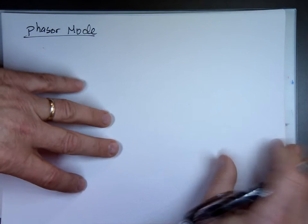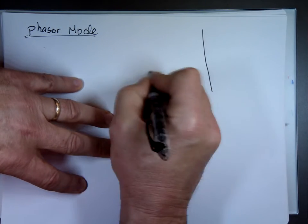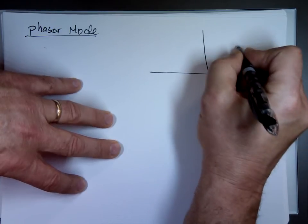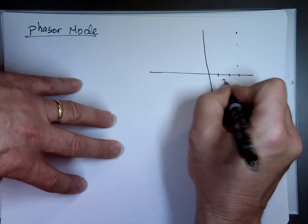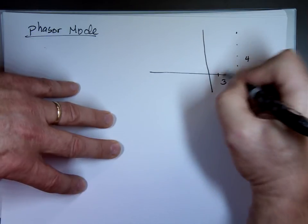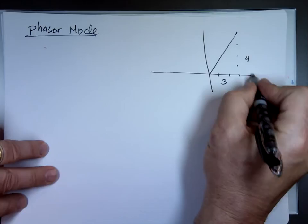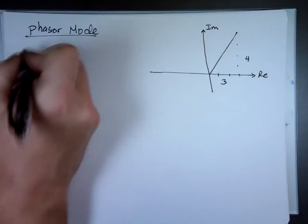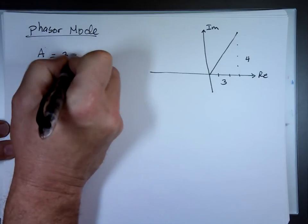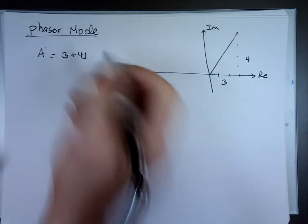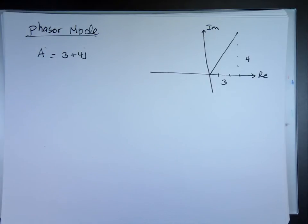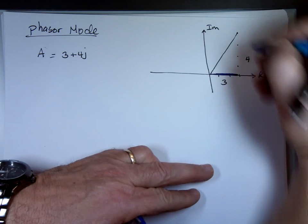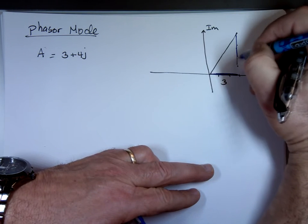I'm going to give you a problem in rectangular and change it to phasor. We have 3 plus 4J. That's 3 in the real portion and 4J in the imaginary portion. This is the real portion, this is the imaginary, so this we call vector A, which has a value of 3 plus 4J. If you don't want to keep it in rectangular, you can change it to what we call polar — or phasor mode.